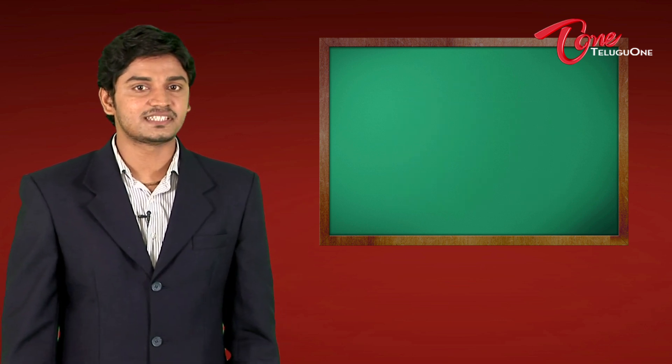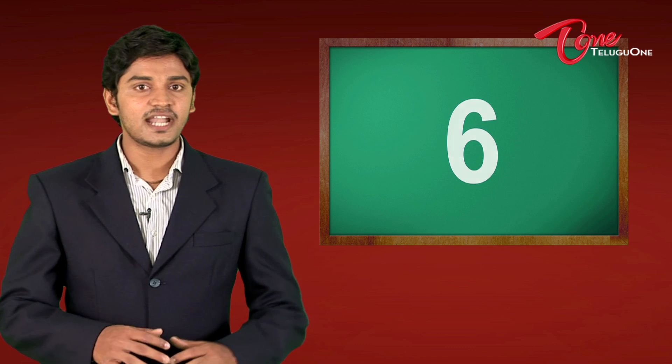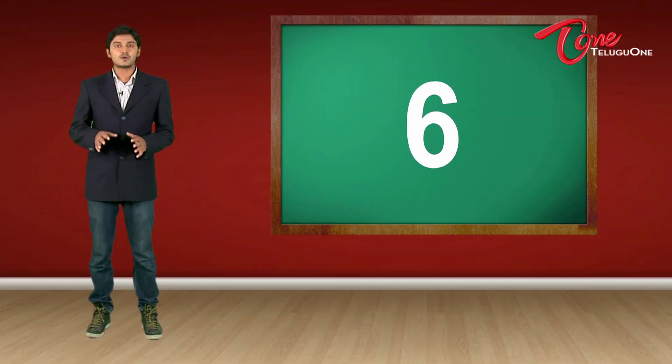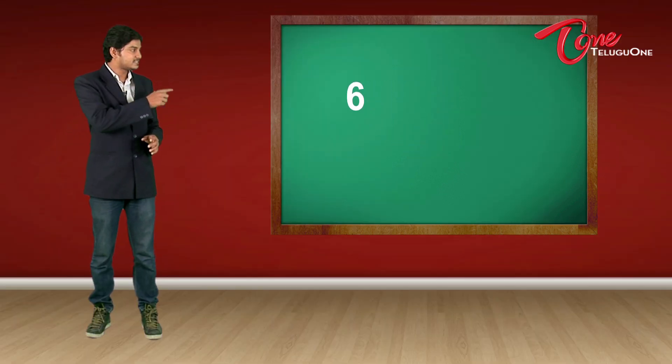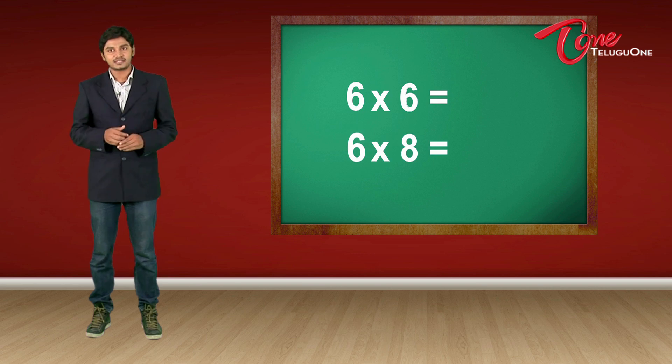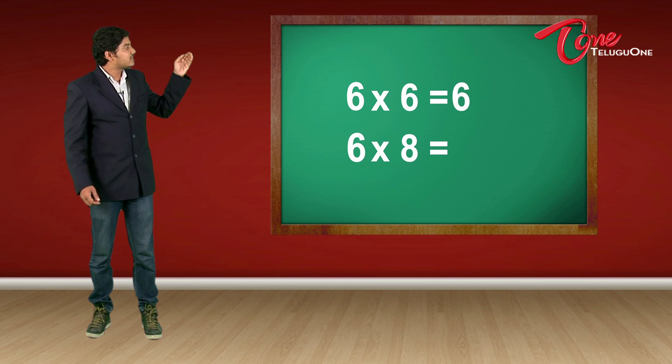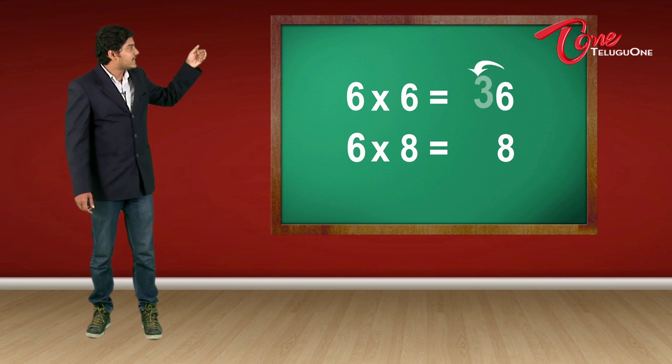Now, let us go to table 6. You don't have to memorize the entire table 6. We're going to learn only 6 times 6 and 6 times 8. So, 6 times 6. I write my 6 as it is. Then, for 6 times 8, I write 8 as it is. Now, half of 6 is 3. Write just before 6 and it is 36.